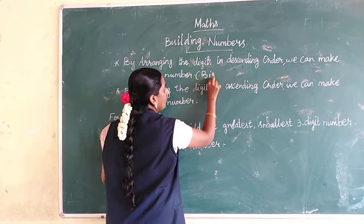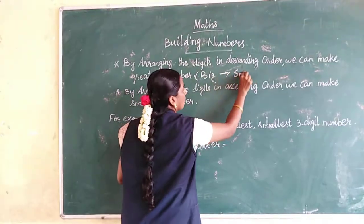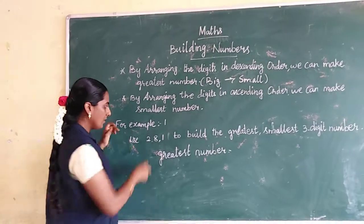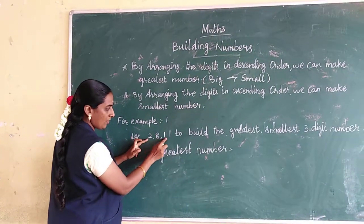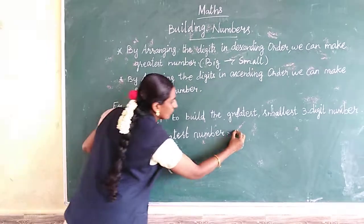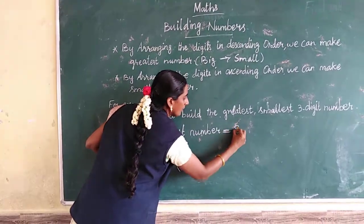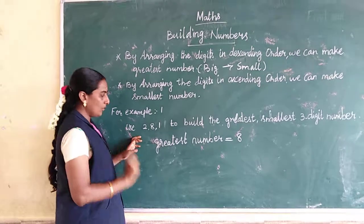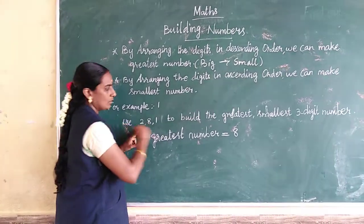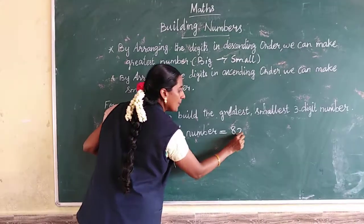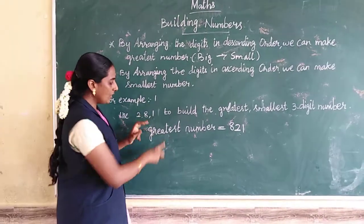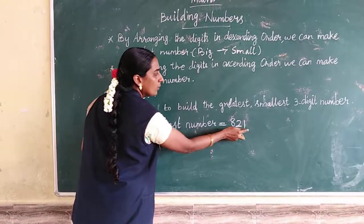From 2, 8, 1 — the biggest number is 8. Next, comparing 1 and 2, the biggest is 2. Last one is 1. So the greatest number is 821.